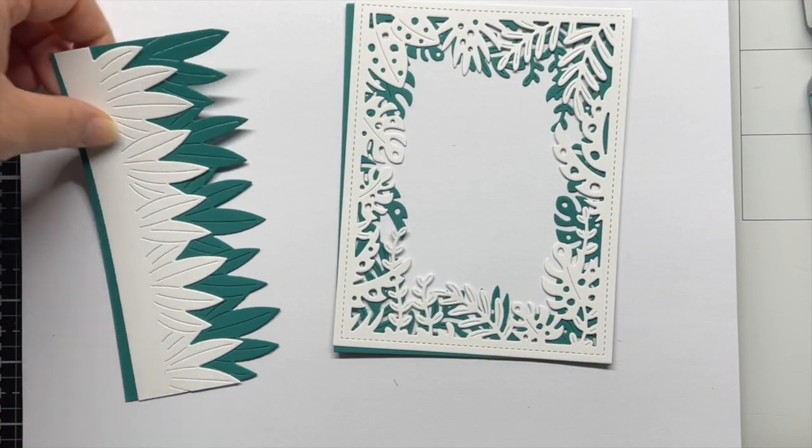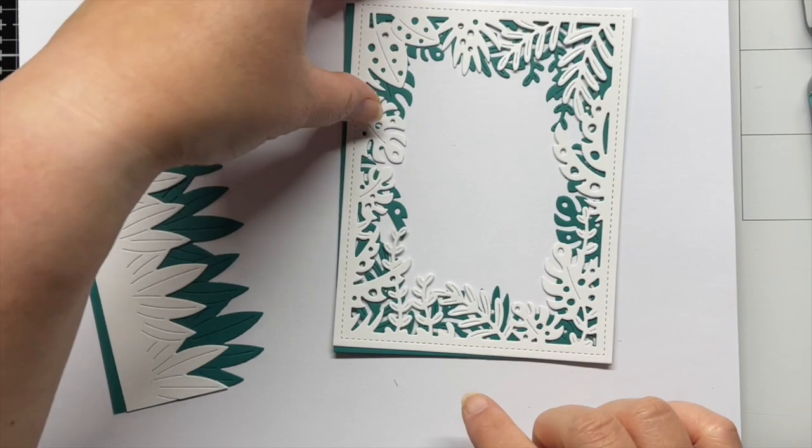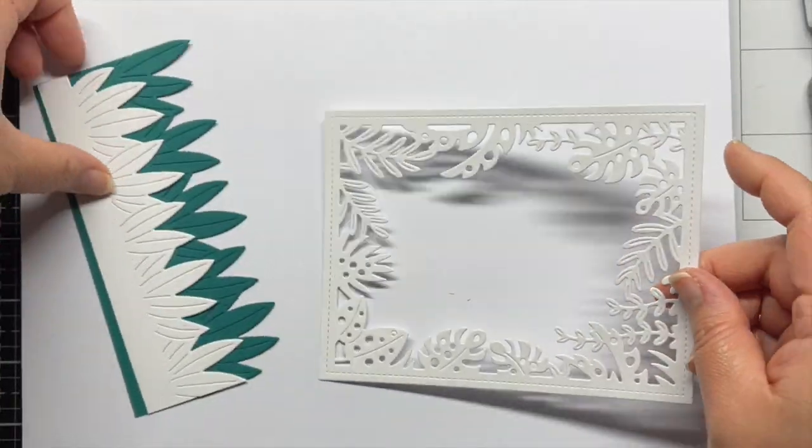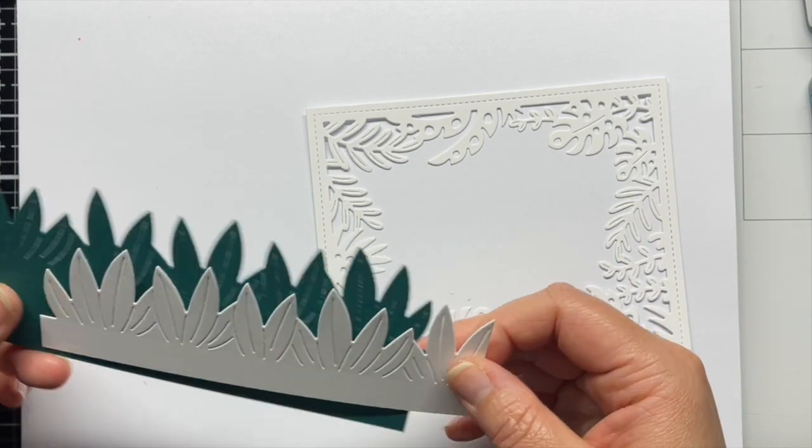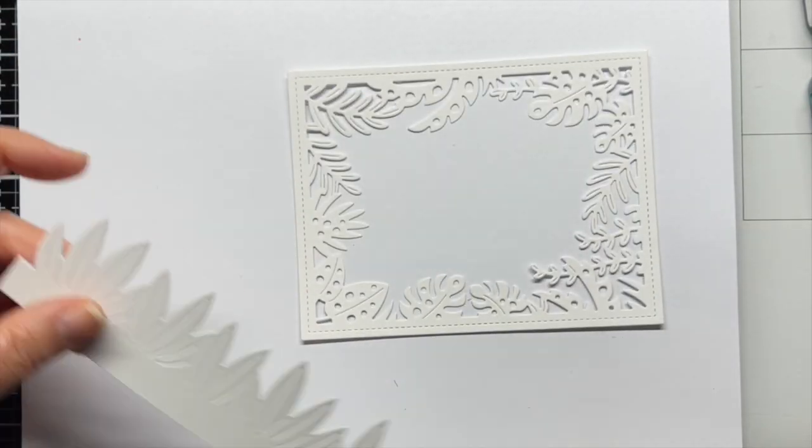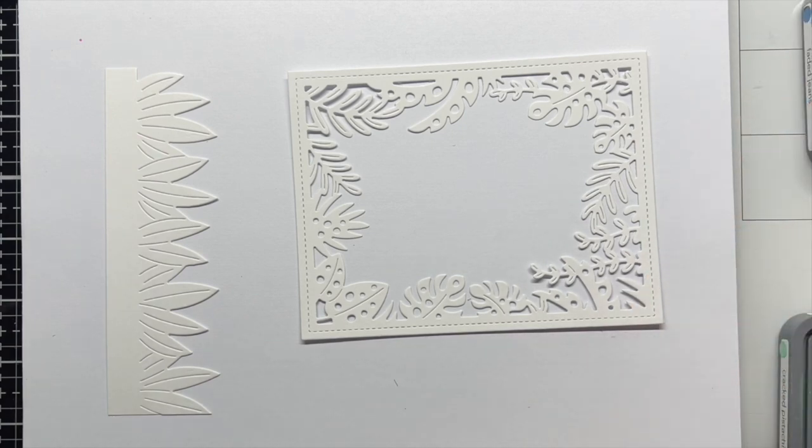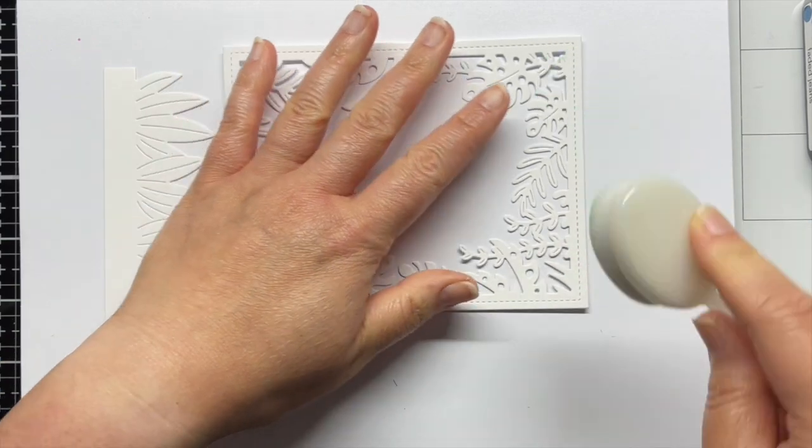First, I die cut the Slimline Tropical Leaves Border Die from Strathmore Bristol Smooth cardstock and Rainforest cardstock. Each border is 5 1⁄2 inches long and approximately 1 3⁄4 and 2 1⁄2 inches tall, but that can vary depending on your design. I also die cut the Tropical Leaves backdrop from the same two cardstocks.